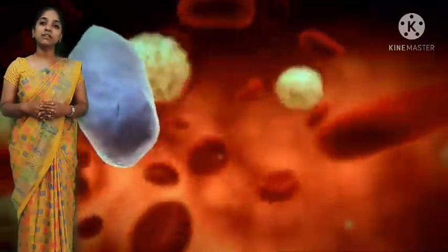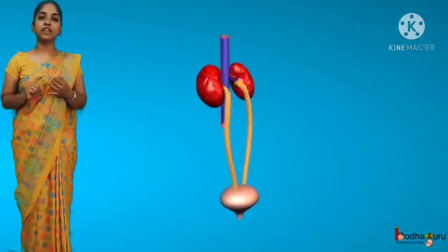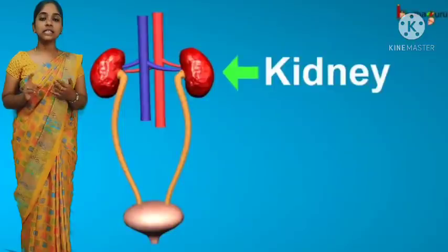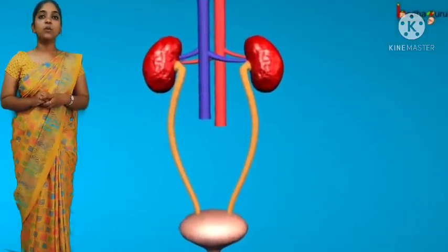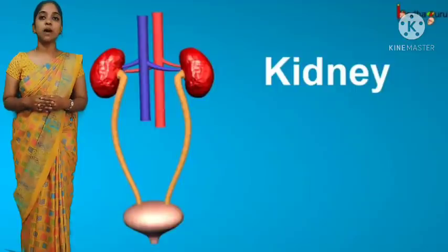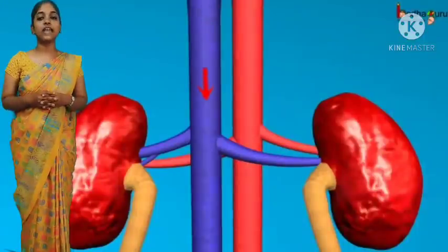We have seen the circulatory system. The next system is the excretory system. The excretory system is made up of a pair of kidneys, ureter, urinary bladder, and urethra. It helps remove waste from the body. The process by which waste is removed from the body is called excretion.